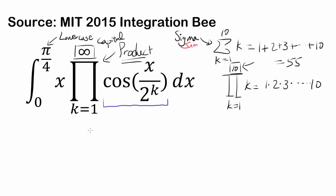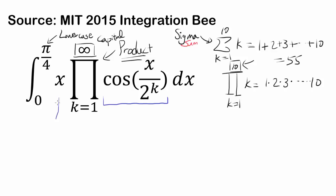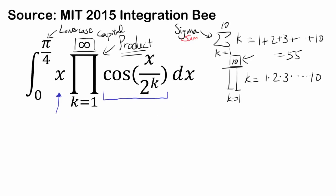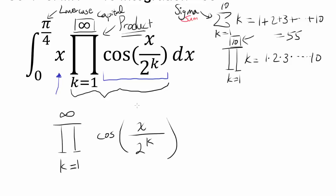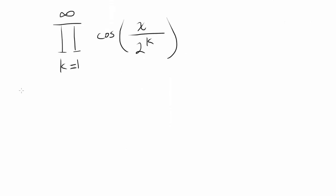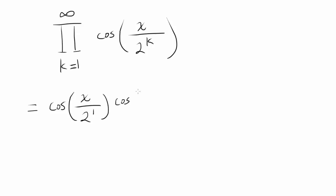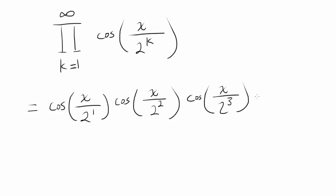How do you attack this? Well, the x seems nice enough, but the product inside is what's making this question very crazy. So let's focus on that part and see if we can simplify it. We have the product from k equals 1 to infinity of cosine of x over 2 to the k. Let's plug in: k=1 gives cosine of x over 2, k=2 gives cosine of x over 4, k=3 gives cosine of x over 8, cosine of x over 16, and so on infinitely.